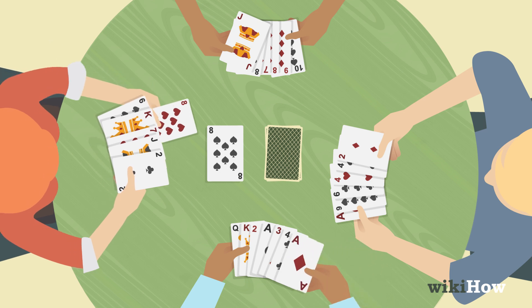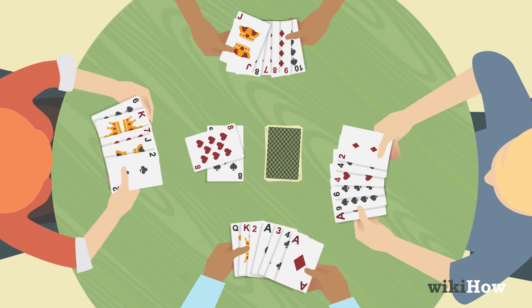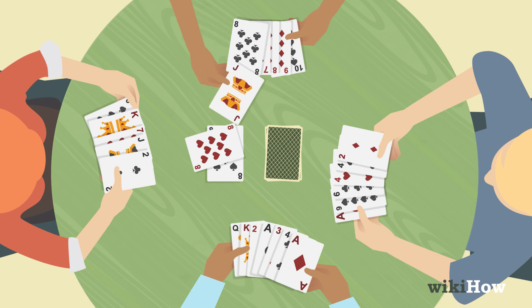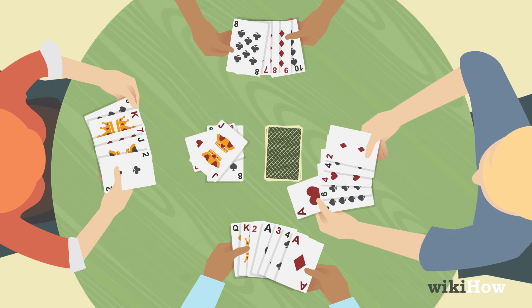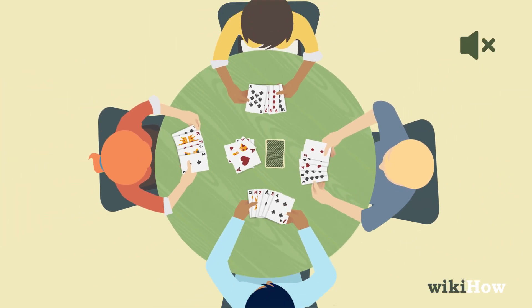Then, the next player to their right tries to match the top card. Play continues like this around the circle. Other common rules include no talking except when required by another rule.